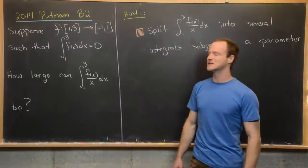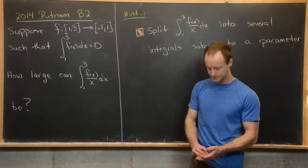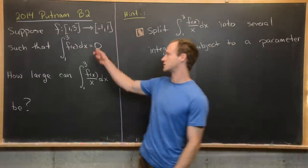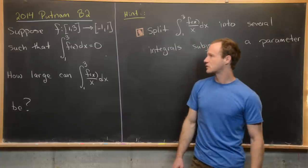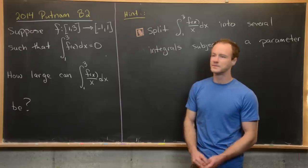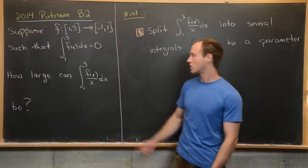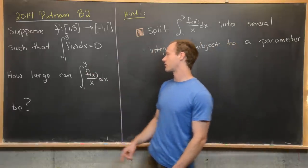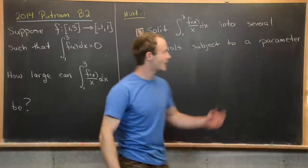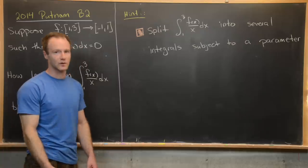This tells us that the function is bounded below by -1 and above by +1. The function also satisfies the rule that the integral from 1 to 3 of f(x) dx equals 0. Our goal is to determine how large the integral from 1 to 3 of f(x)/x can be. I'll give a hint before we look at a solution.